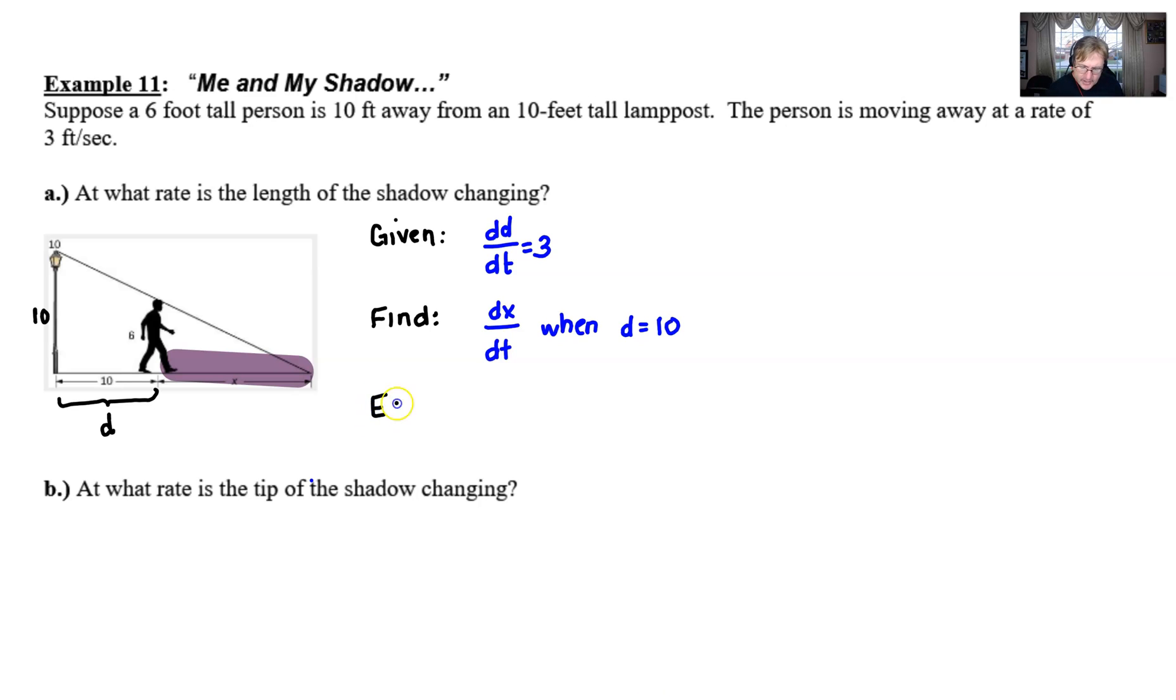Now we have our equation. If you're watching video 11 here, it's probably likely you've caught some of my other videos on related rates. After all, there are 10 of them. You'll see that most of those problems that are full-blown related rate problems that we did are always scaffolded with these three words: given, find, and equation. I think it's a wonderful way to enter a related rate problem.